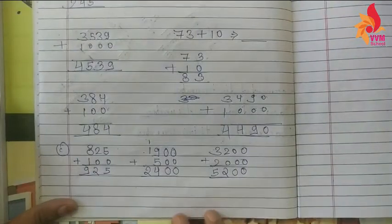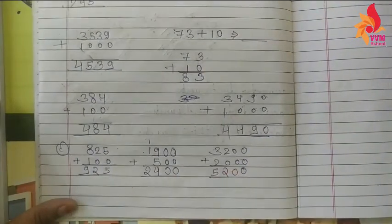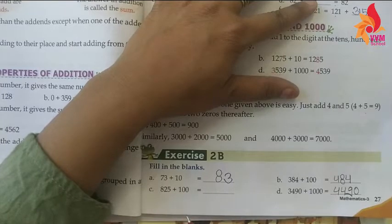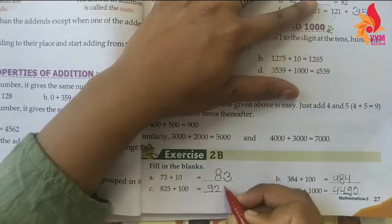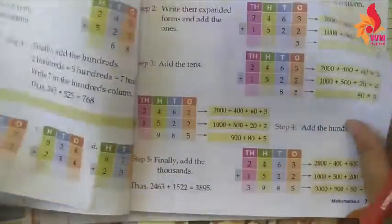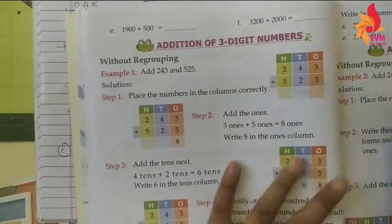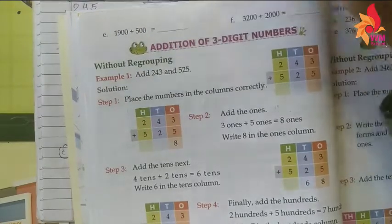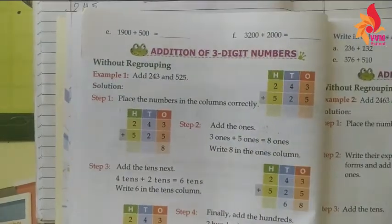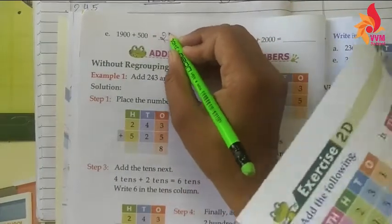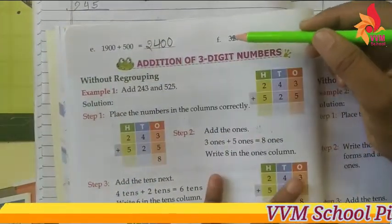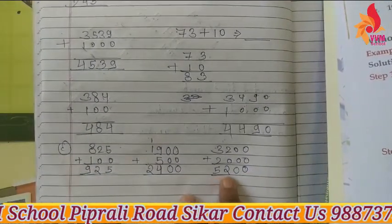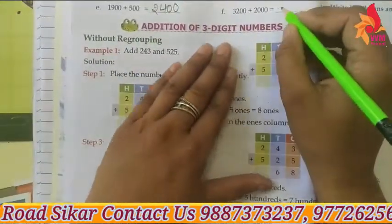Yeh apne teenon question kar liye — 100, 500, aur 2000 wale. Ab dekhiye: 825 mein 100 add kiya to kitne hain aapke paas? 925. Next dekhiye: 1900 mein 500 add kiya to answer kya hai aapke paas? 2400. Phir dekhiye: 3200 ko 2000 se add kiya to answer kya hai aapke paas? 5200.